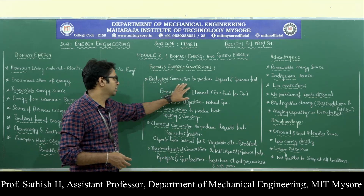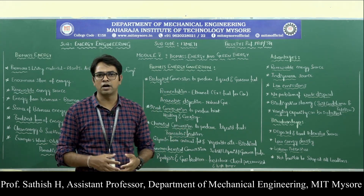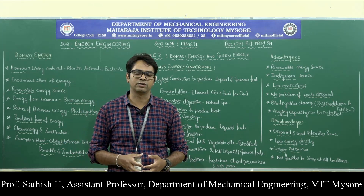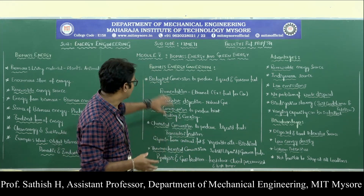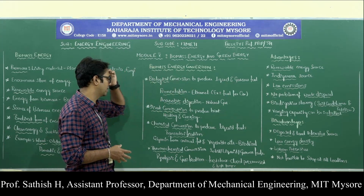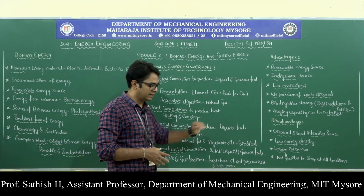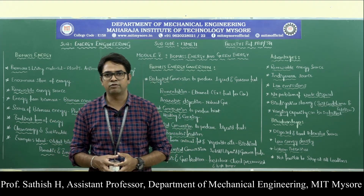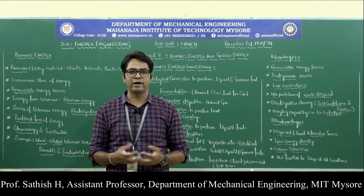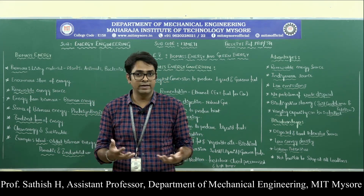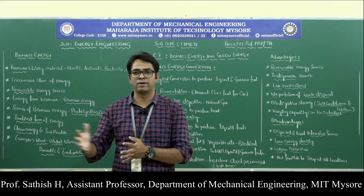Basically, biological conversion uses biological processes to convert biomass energy into useful forms of energy. Next is direct combustion to produce heat. An example of direct combustion is wood — if you have dry wood, which is a biomass energy because it comes from plants and is organic matter.